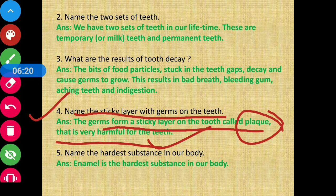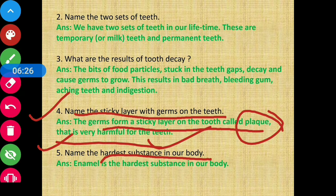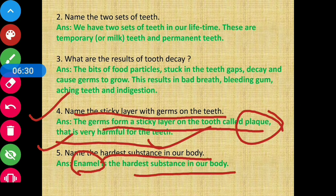Question number five: name the hardest substance in our body. Very easy question — the answer is enamel. Enamel is the hardest substance in our body.